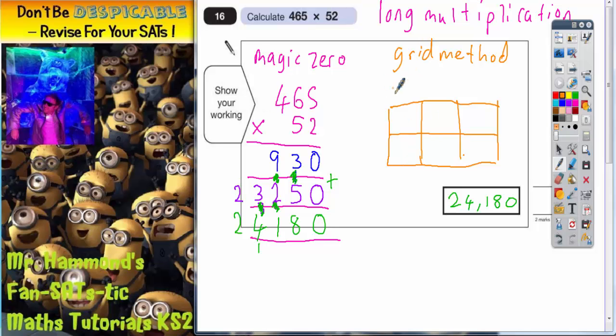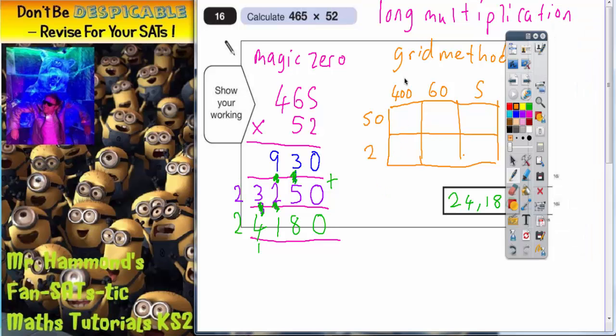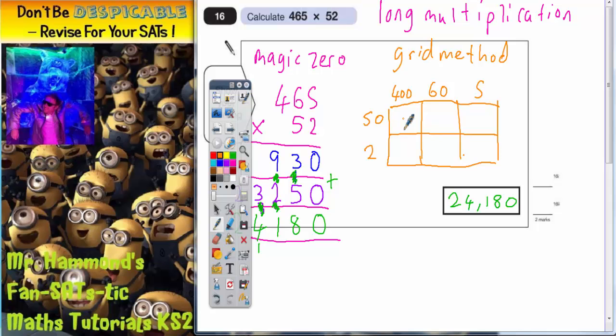So let's break the 465 down into 4, 6, and 5. And break the 52 down into 50 and 2. So when we're multiplying, this top left box is 50 times 400. Well 5 times 4 is 20.